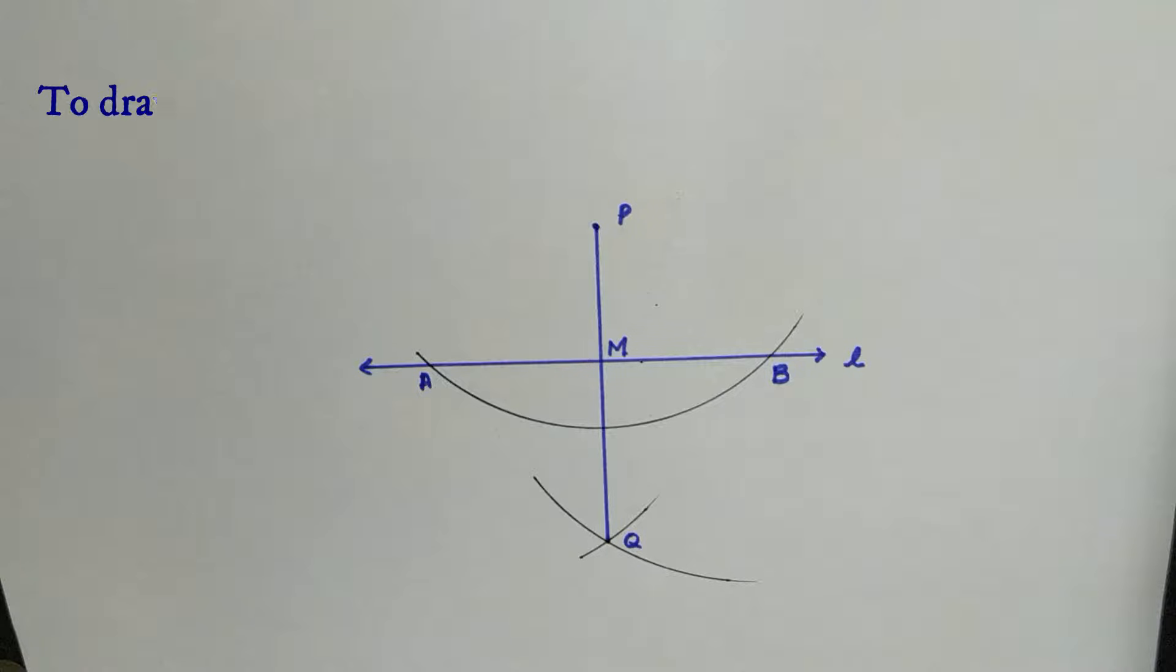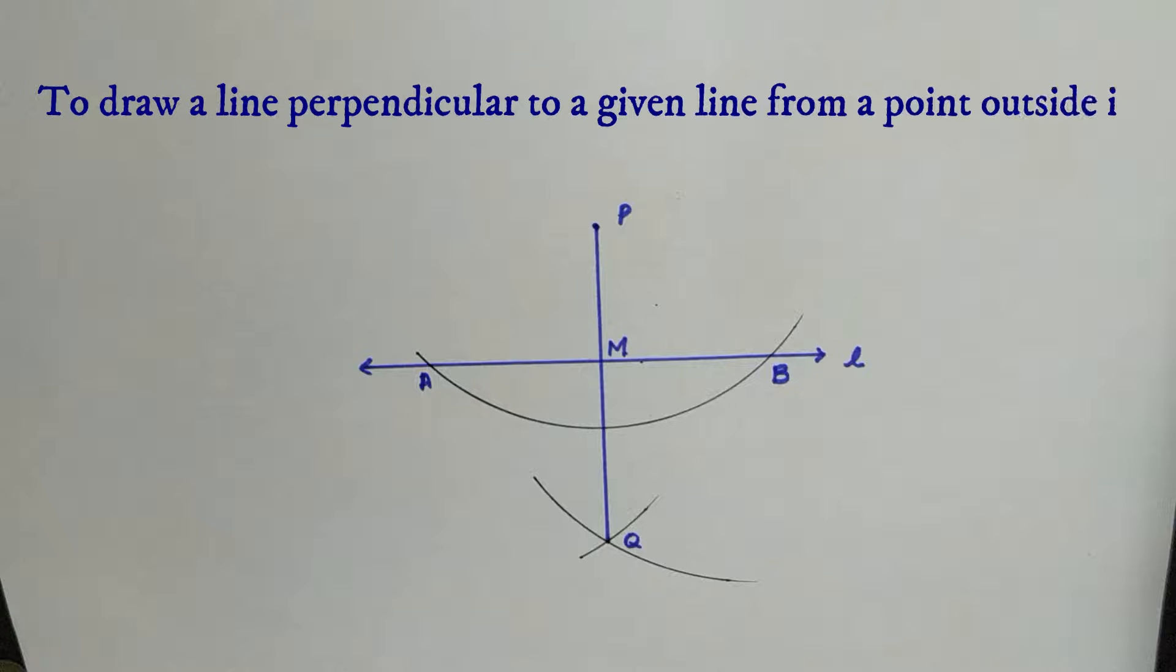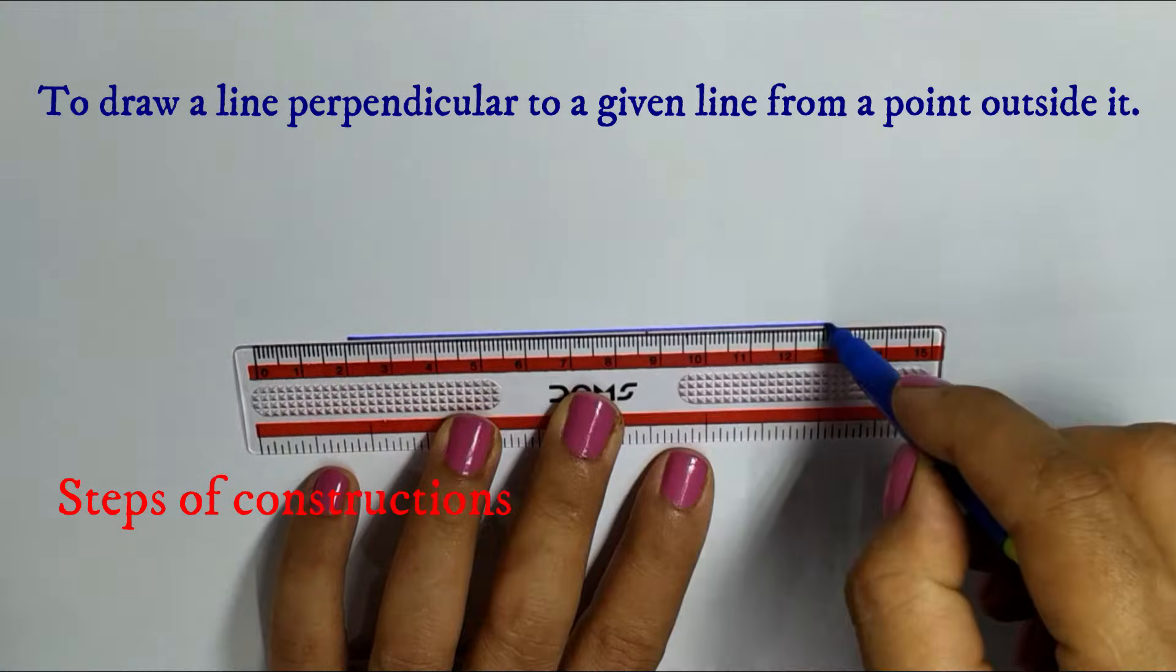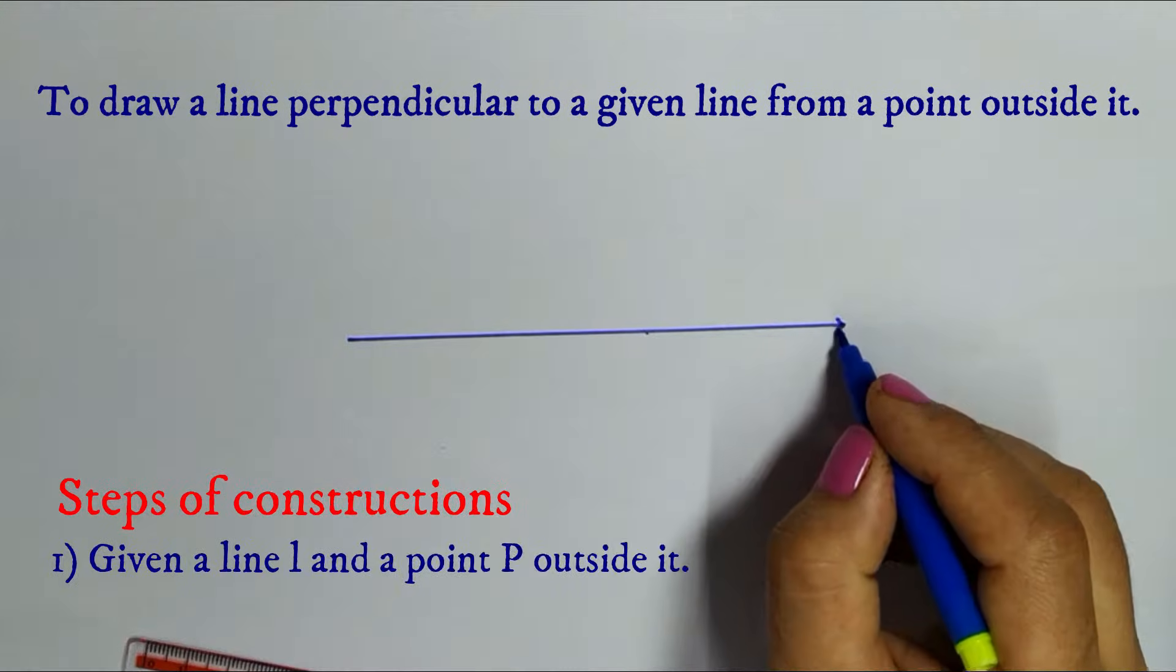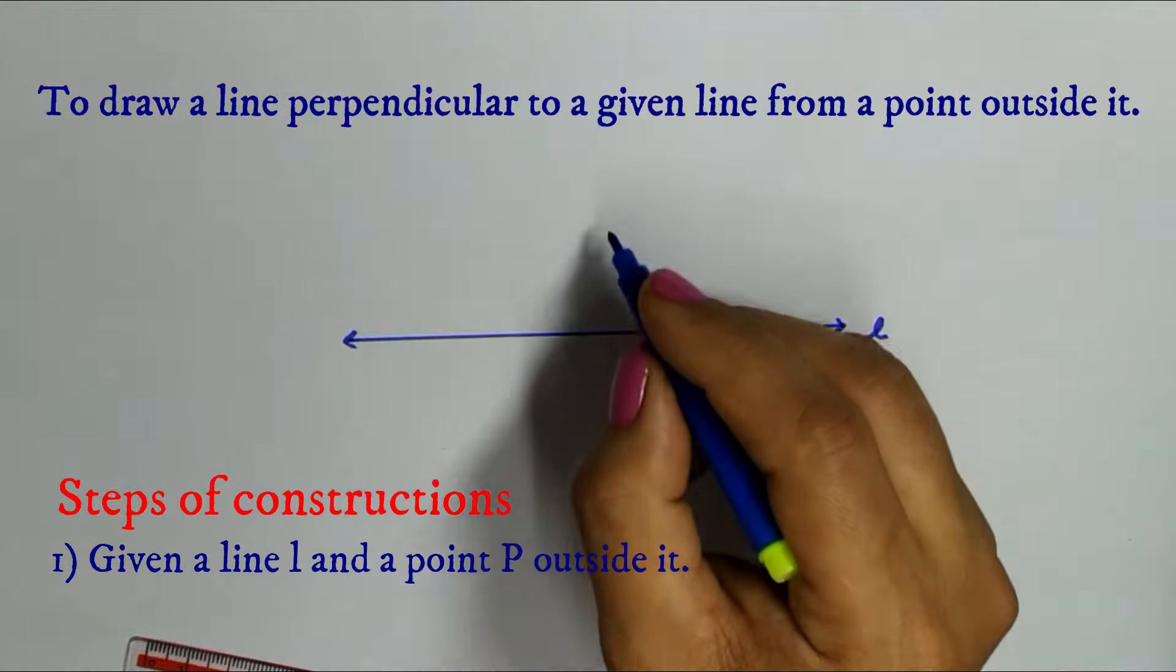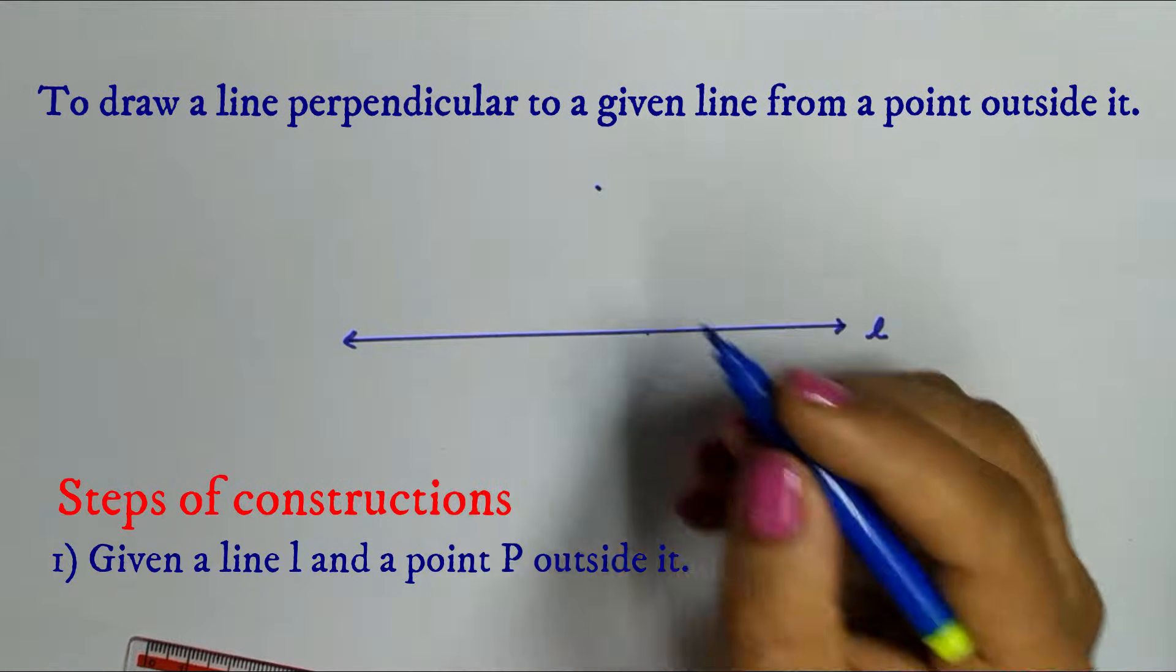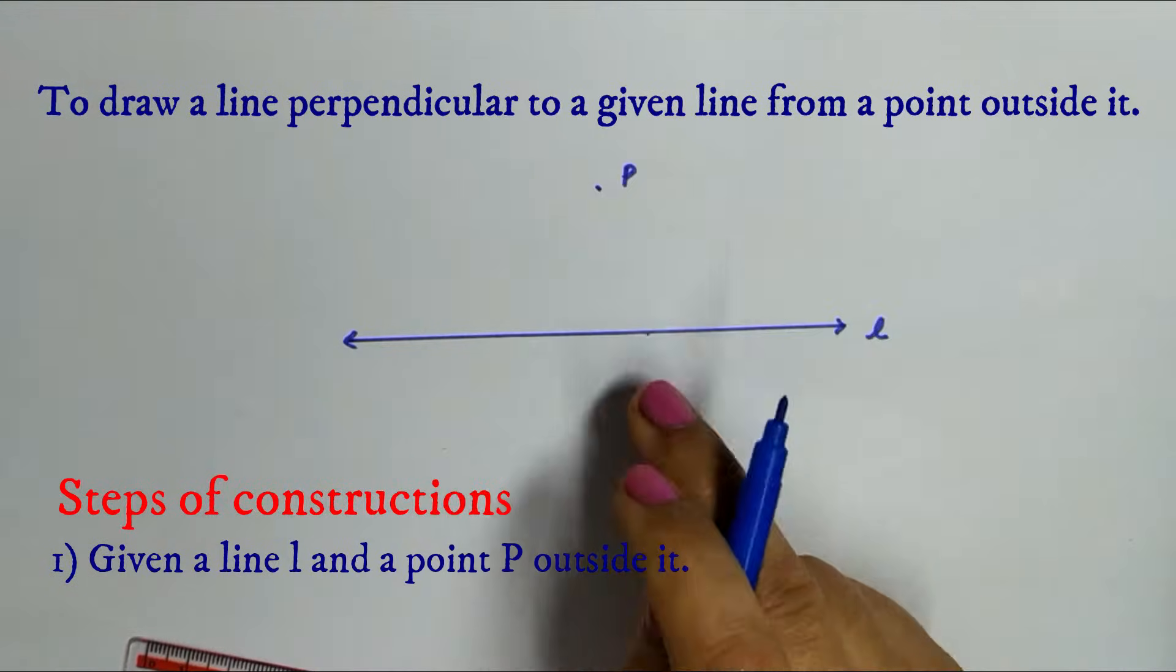To draw a line perpendicular to a given line from a point outside it. Let L be a line and P be the point which is outside this line.